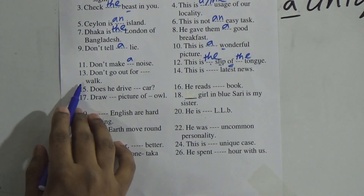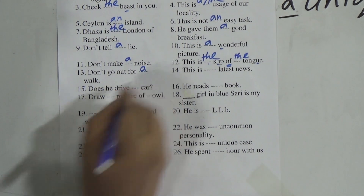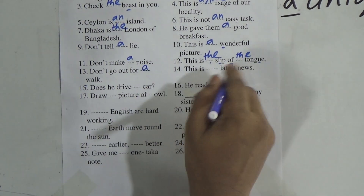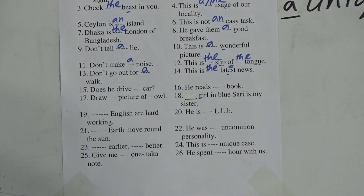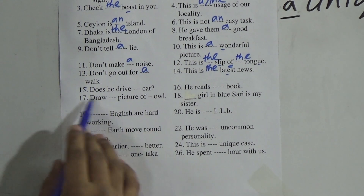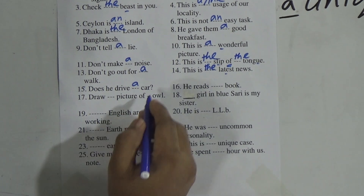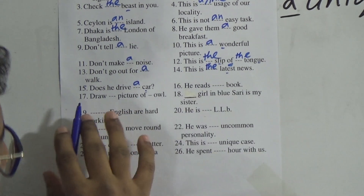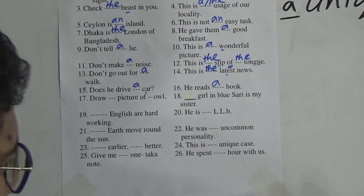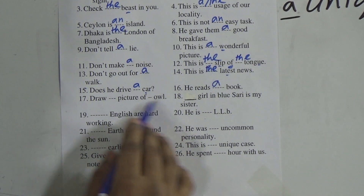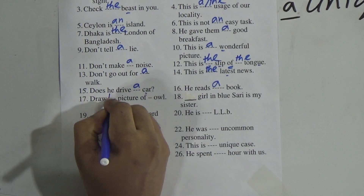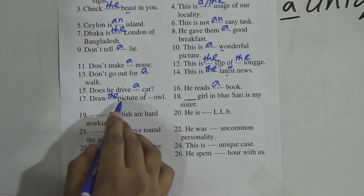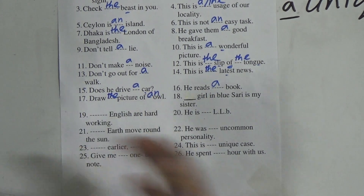Number 13: Don't go out for a walk — 'W' is a consonant, we use 'a'. Number 14: This is the latest news — 'latest' is a superlative degree, so before a superlative degree we use 'the'. Number 15: Does he drive a car? — 'car' is indefinite here. He reads a book — we don't know the name of the book, it's indefinite, so we use 'a'. Draw the picture of an owl — we find 'the ___ of' pattern, and 'O' in owl is a vowel so we use 'an'.